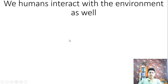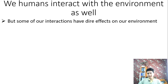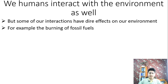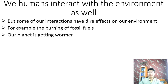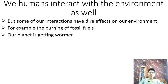Humans, like other organisms, interact with the environment. But sadly, our interactions sometimes have dire consequences. For example, over the past 150 years, humans have greatly increased the burning of fossil fuels — like coal, oil, and gas. The burning of fossil fuels releases large amounts of carbon dioxide and other gases into the atmosphere, causing heat to get trapped close to the Earth's surface — something called global warming.